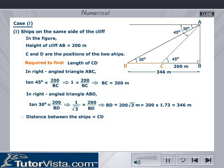Therefore, the distance between the ships equals CD = BD - BC = 346 - 200 = 146 meters.